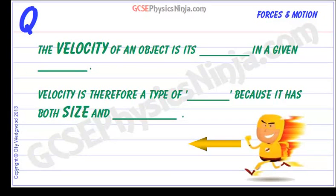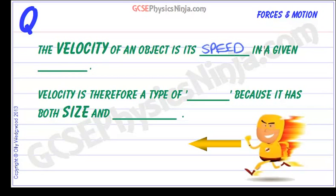Up until now we've been talking mostly in terms of speed of an object to describe its motion. But now we need to take a look at velocity, which is very much like speed except it is in a particular direction. So the velocity of an object is its speed in a given direction.